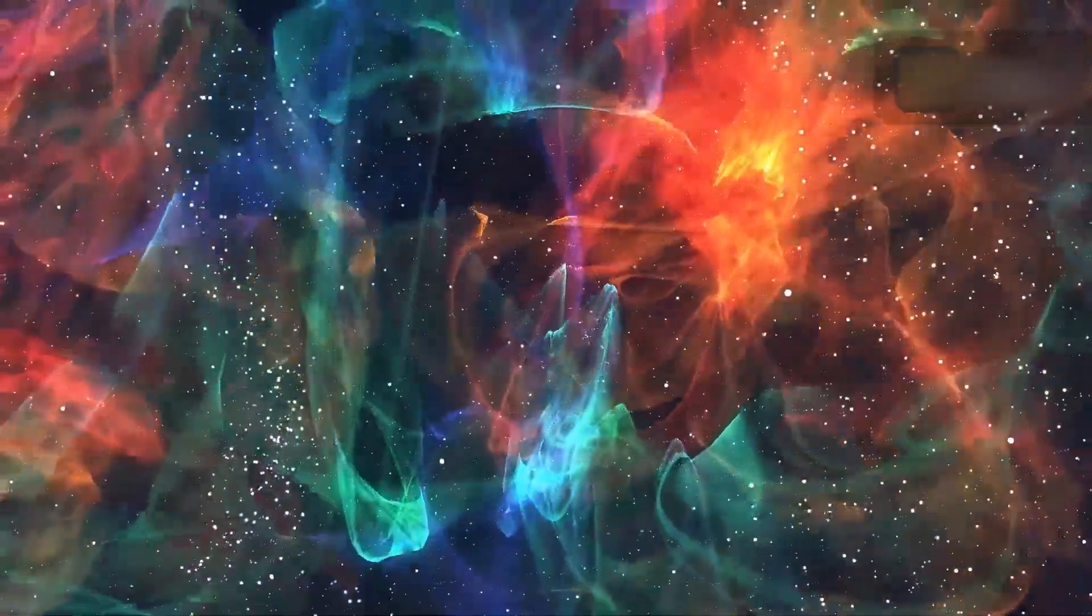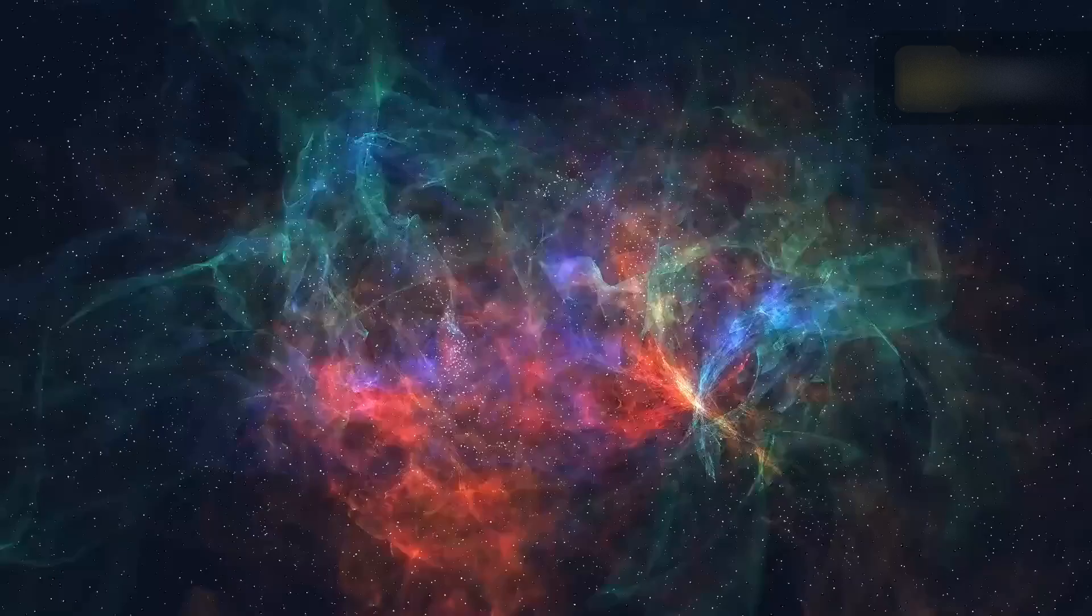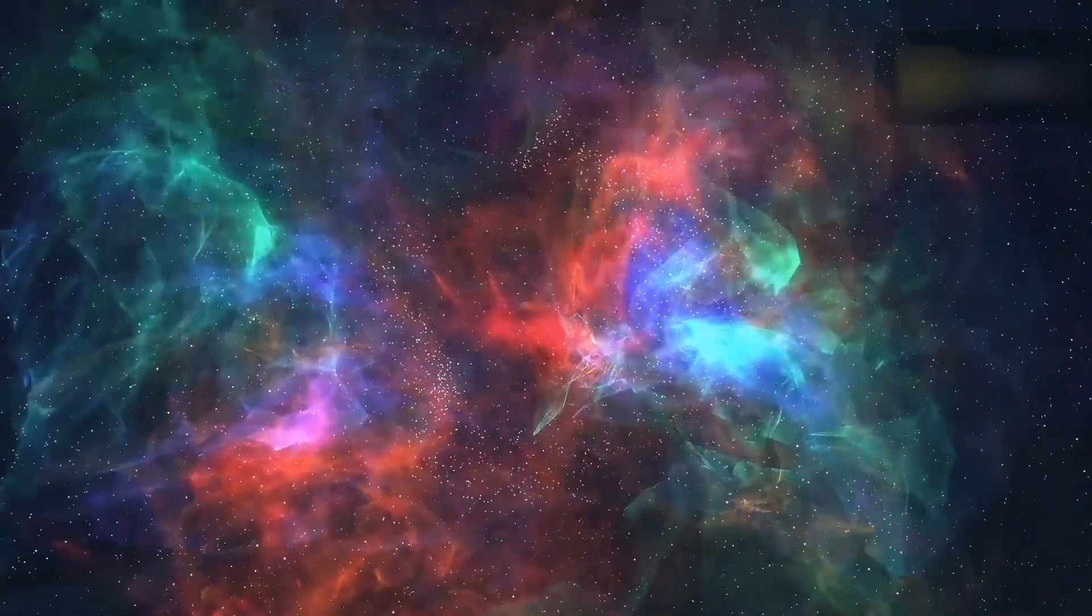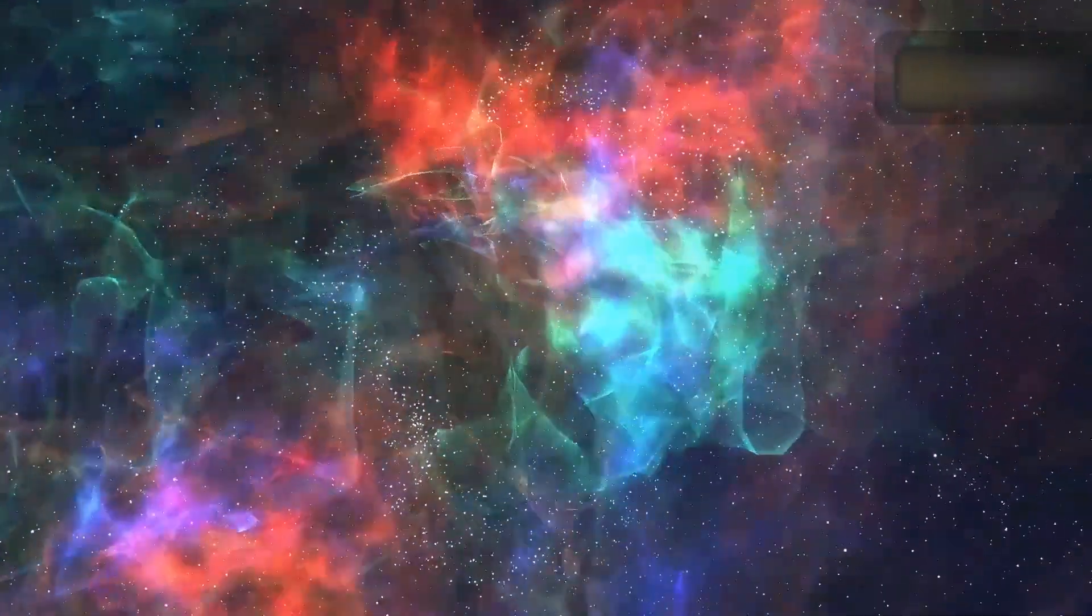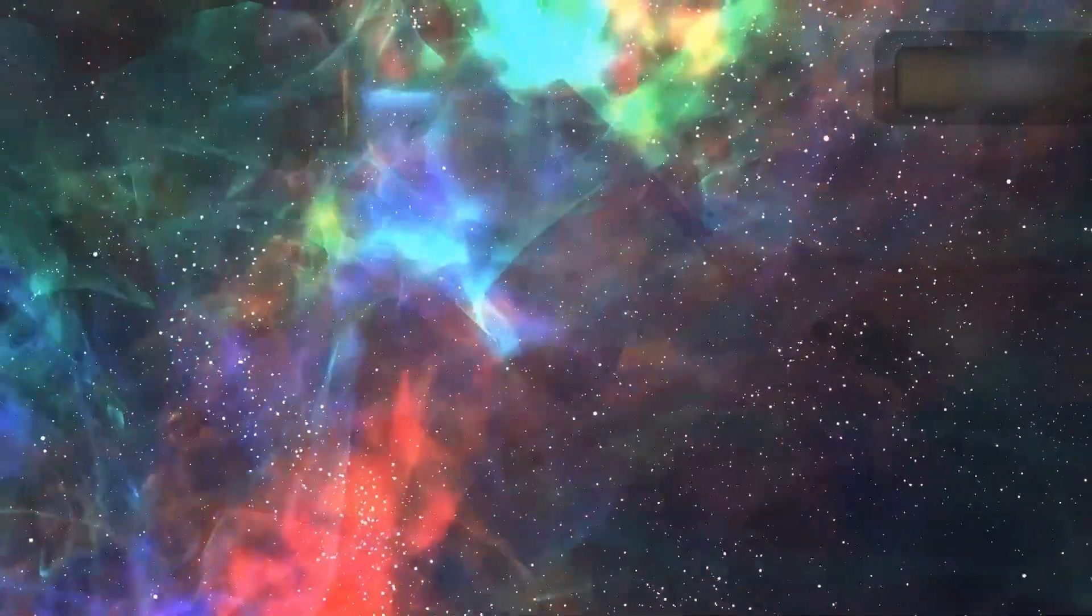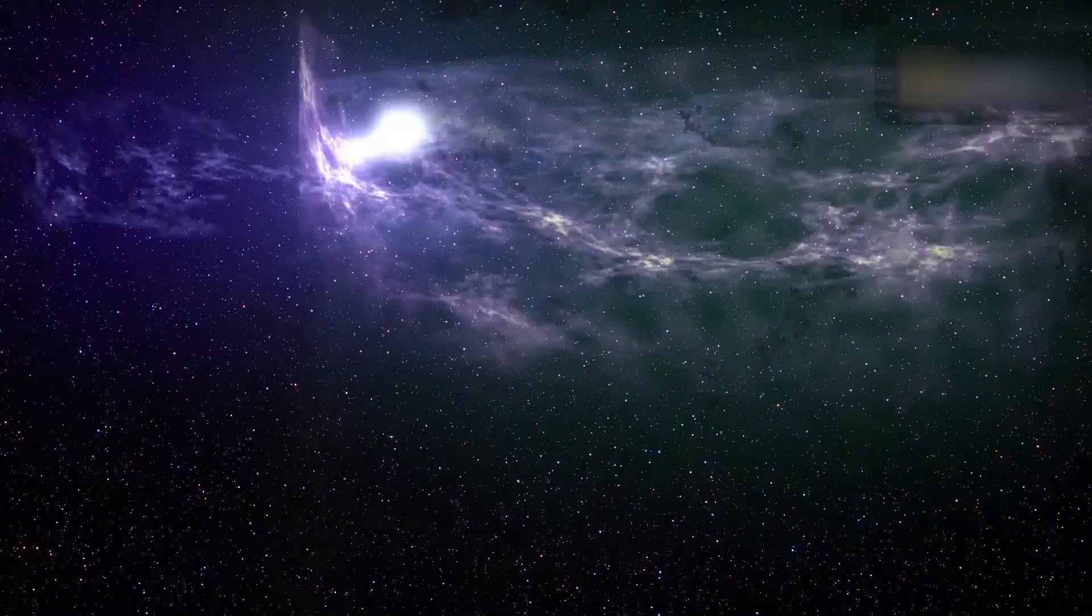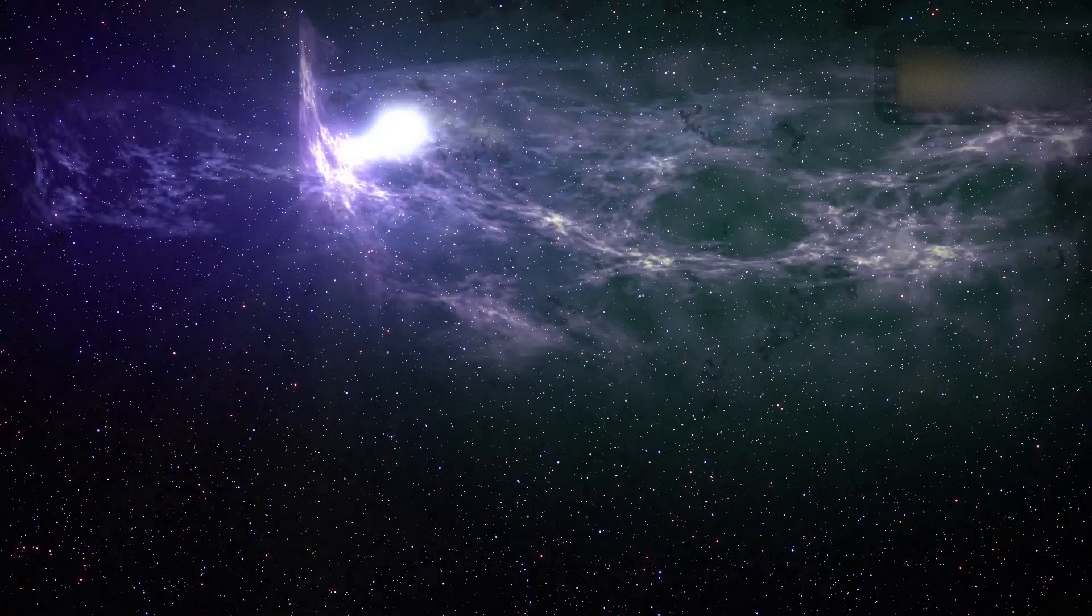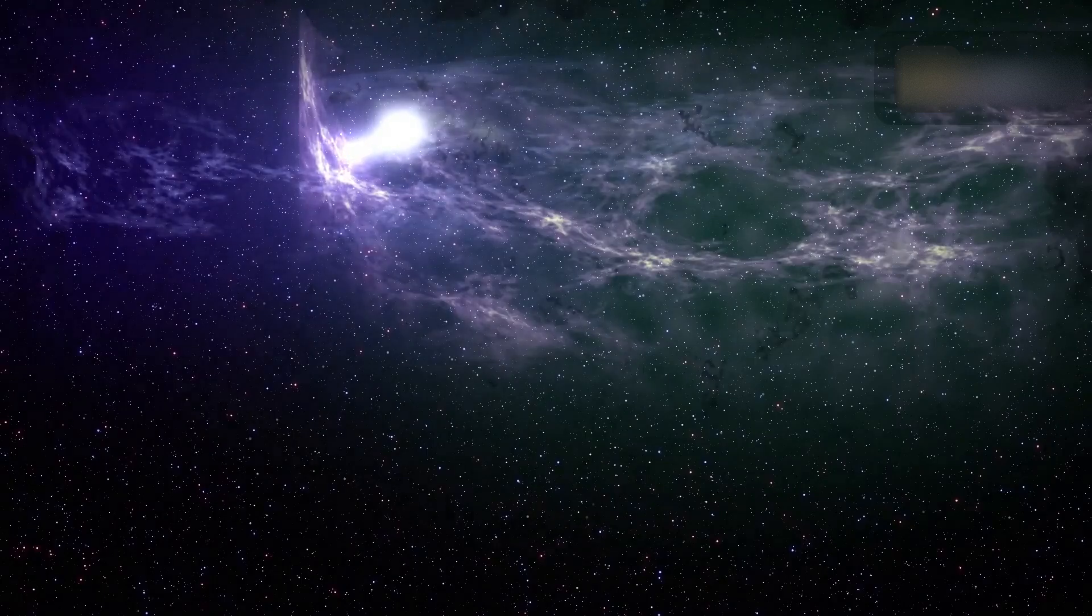Our central star, the Sun, is 150 million kilometers or 93 million miles from us. This distance equals one astronomical unit. We sometimes use this unit of measurement to give us a perspective of how far other objects are in comparison to the Sun-Earth distance. For example, Pluto is 39.4 astronomical units from the Sun. It means that this dwarf planet is 39.4 times as far from the Sun as the Earth is.